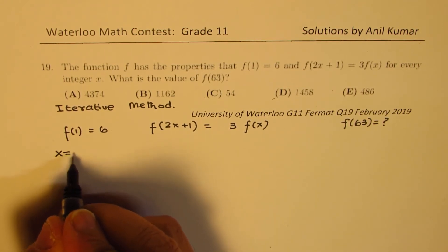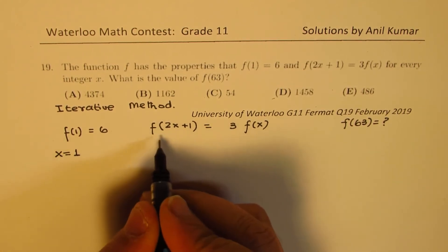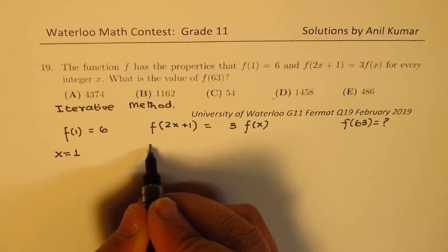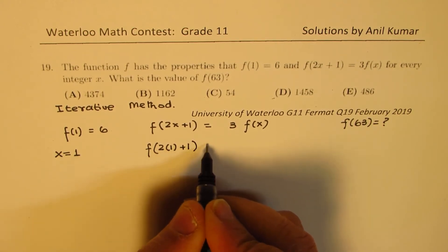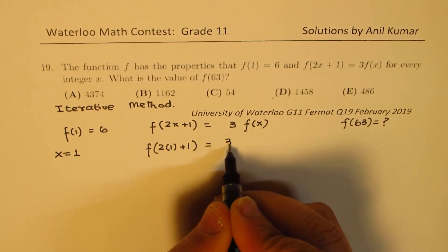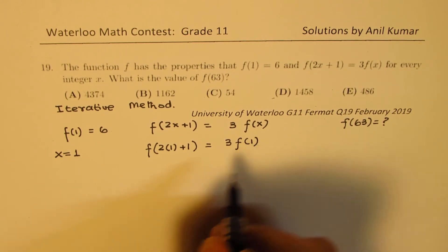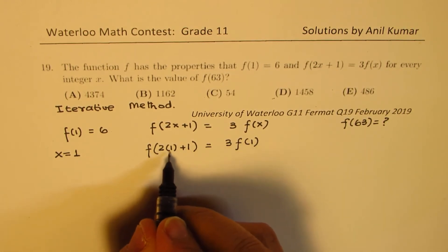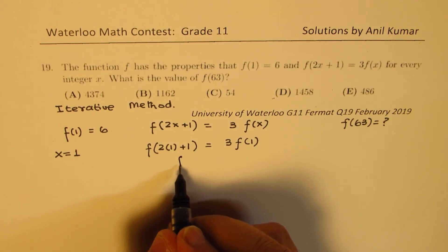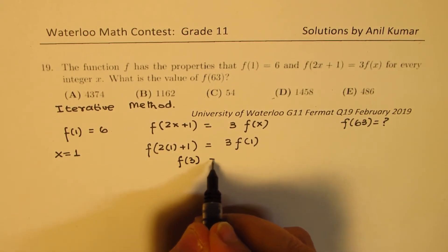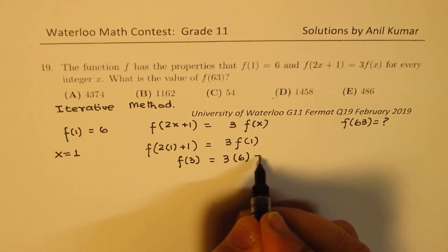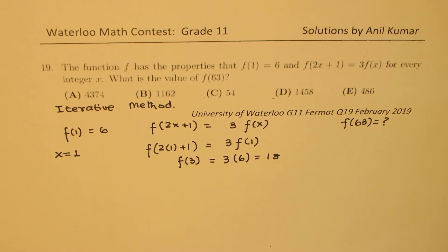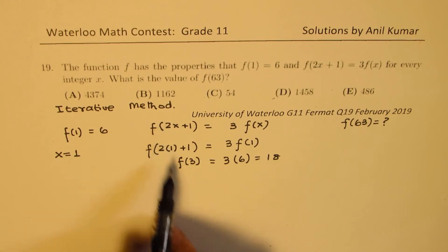I'll substitute x = 1. If I substitute x = 1 here, I get f(2×1+1) = 3f(1). Now that is 2 times 1 is 2, and plus 1 is 3, so we get f(3) = 3f(1). f(1) is given to us as 6, so it is 18. We get the value of f(3).